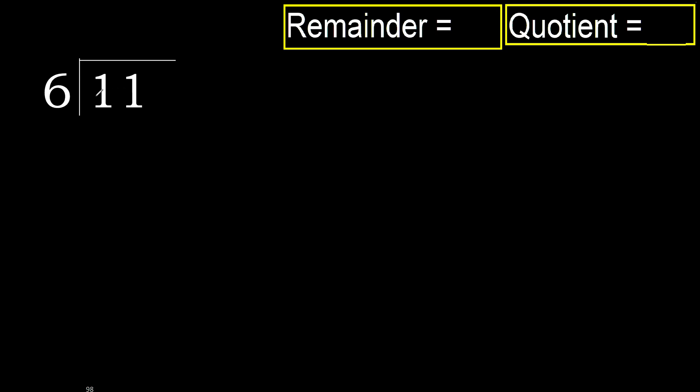11 divided by 6. 1 is less, therefore next. 11 is not less, therefore with 11: 6 multiplied by which number is nearest to 11 but not greater?